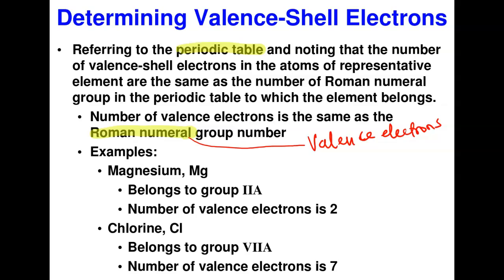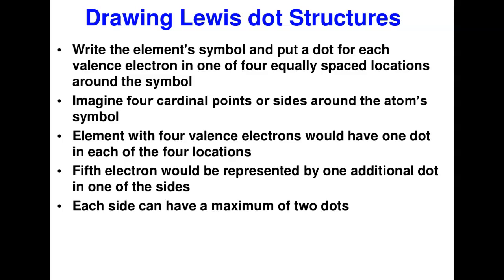Again, chlorine is in group 7A, which implies it has seven electrons in its outermost shell. So you can easily determine this: for representative elements, the Roman numeral group number corresponds directly to the valence shell electron count. Now, how do we draw the Lewis dot structure of these elements?